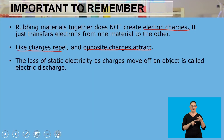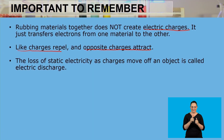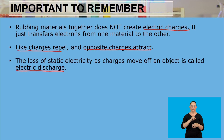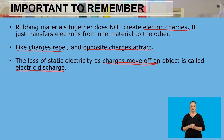In addition, we always need to remember that the loss of static electricity as charges move off an object is called an electric discharge. So whenever the loss of static electricity occurs, as charges are moving off an object, that process is called electric discharge.